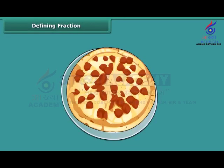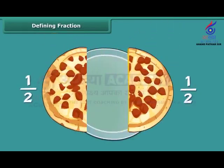Fraction indicates part of a whole thing. 1 upon 2 means that one whole thing is divided into two equal parts, and one part out of these two parts is taken.